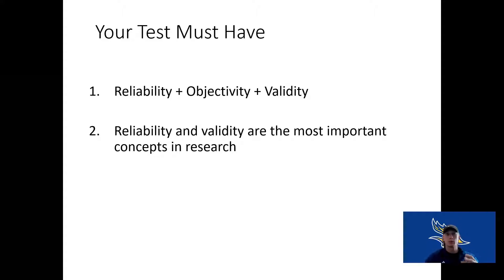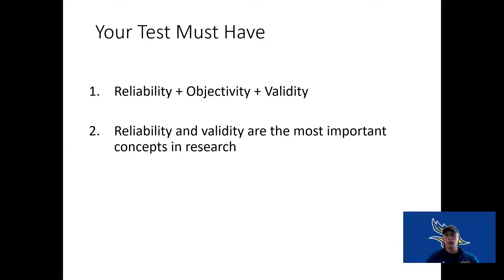These are important concepts. We want to know that when we measure something, we can repeat that measure — not having too much variance within our participants or within the measurement itself, reducing that error. Objectivity means making sure we are measuring what we think we're measuring, not having something else influence that measurement, and that we can trust that test measures the quality we're trying to measure.